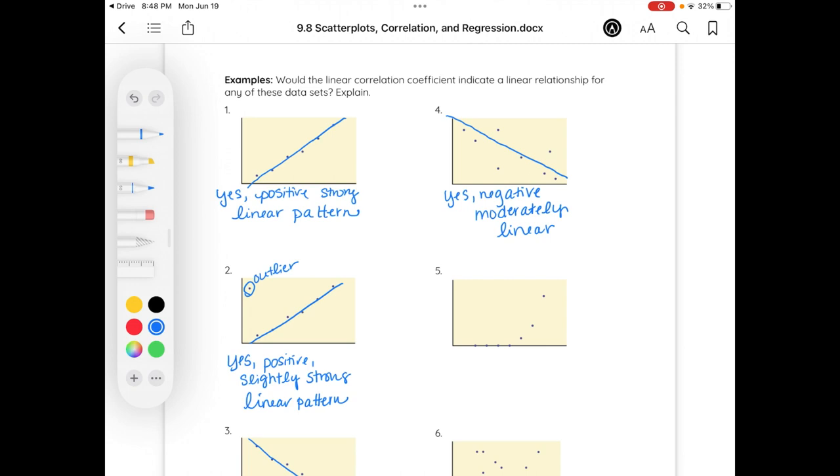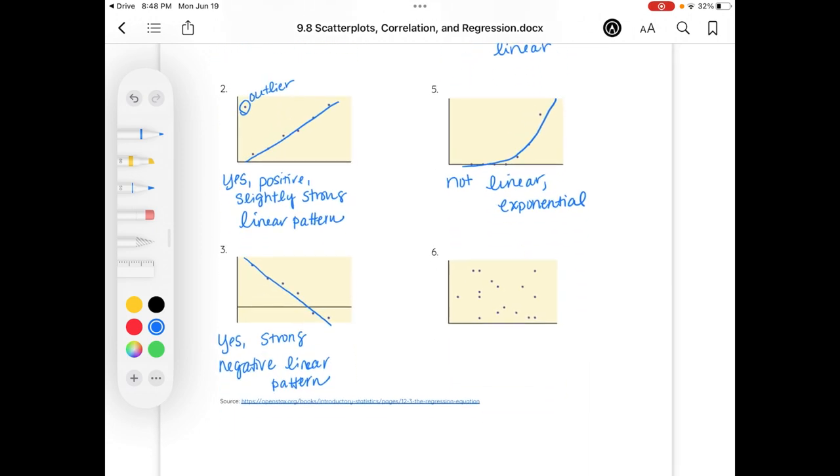Number five. Notice I've got some dots that are on my x-axis, so I'm kind of going like this with my pattern. So this is not linear. So there is a relationship, but this relationship might be more exponential. So we certainly can have other shapes. It doesn't always have to be a linear relationship.